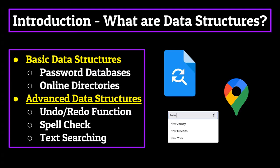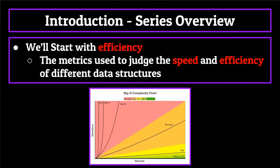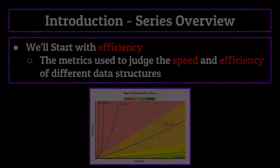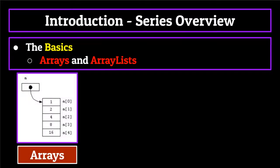Let's discuss the information that we'll be covering in this series. Before we talk about any specific data structures, we're going to have a brief talk about efficiency. We'll discuss the metrics used to judge the speed and efficiency of different data structures, which will then give you a better understanding of why one data structure might be used over another. From there, we'll start by diving headfirst into what I believe are the basic data structures — those being arrays and array lists.